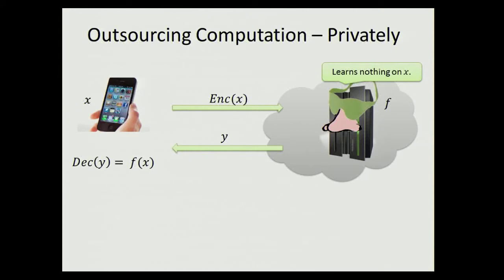The server is not going to be able to compute F of X directly, but rather we require that the server computes some value Y such that Y can later be decrypted on the smartphone to obtain F of X. So Y is, in a sense, an encryption of F of X. This is what homomorphic encryption is all about.